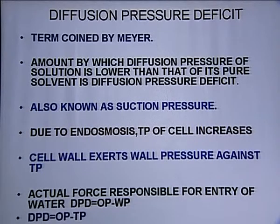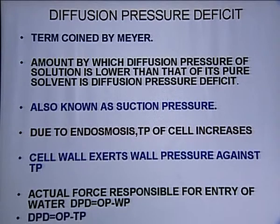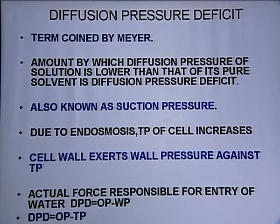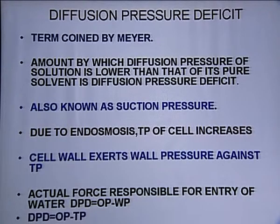Now let's see the value and how osmosis occurs in two types: that is endosmosis and exosmosis. What is endosmosis? When water enters into the cell, that is called endosmosis. When water exits the cell, that is called exosmosis.